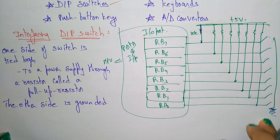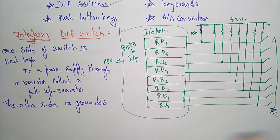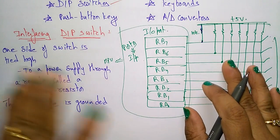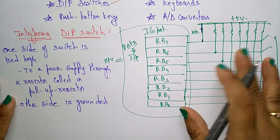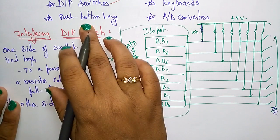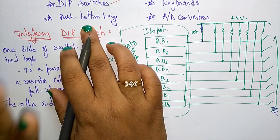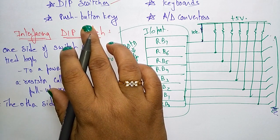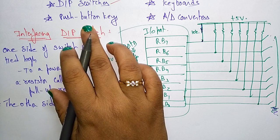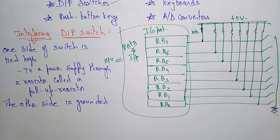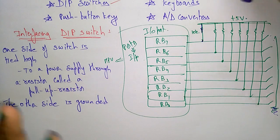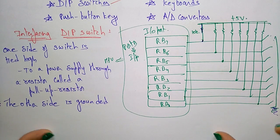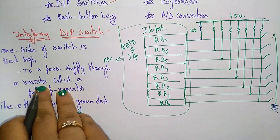The logic level changes when the position is switched — whether it is ground or pull-up will change based on the position of the switches. The push button key works the same as a DIP switch, except that the contact is momentary. These are the commonly used input peripherals.